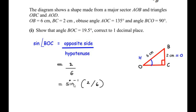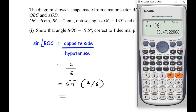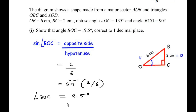We found the opposite side as 2 centimeters and the hypotenuse as 6. Taking the inverse sine on both sides, we get sine inverse of 2 over 6. Putting this in the calculator gives 19.47, and rounding to one decimal place we get 19.5 degrees. So we have found the angle.